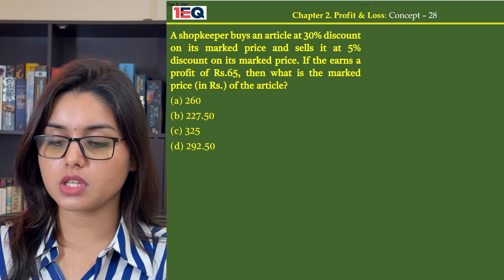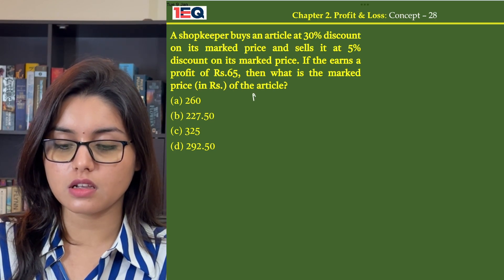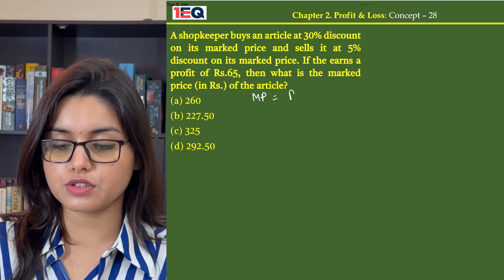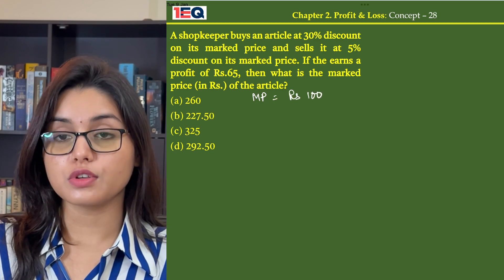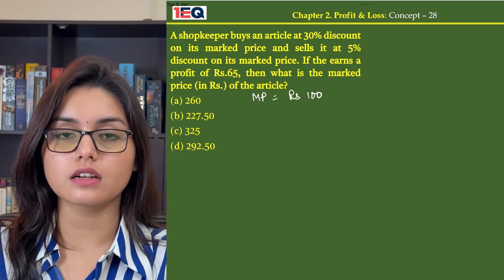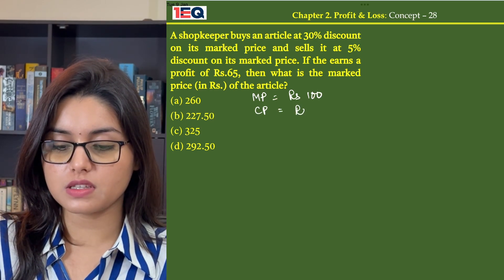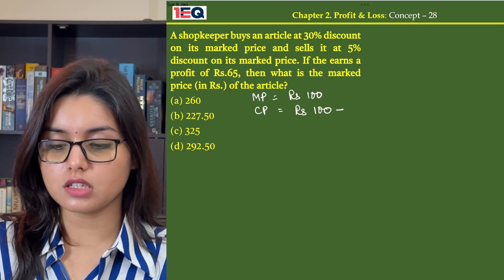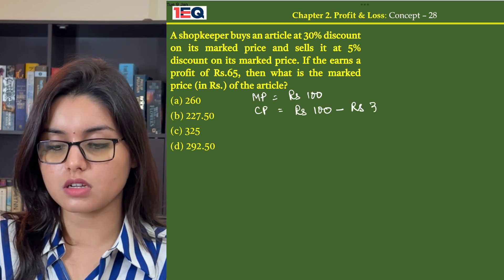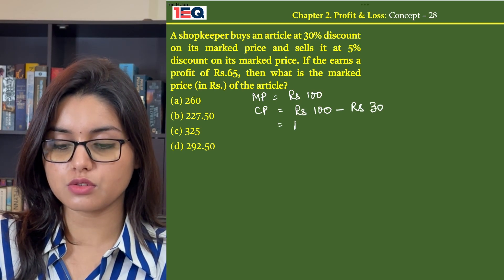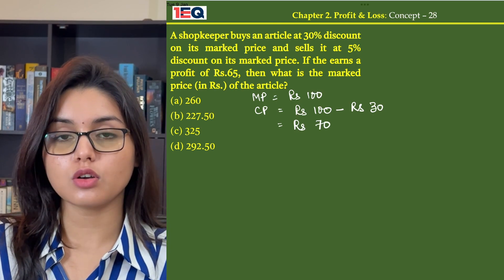So let's assume that the market price when the shopkeeper buys it is Rs. 100. So if he bought the article at 30% discount, that means his cost price becomes Rs. 100 minus 30% discount, that is Rs. 30, which gives us Rs. 70 as his cost price.